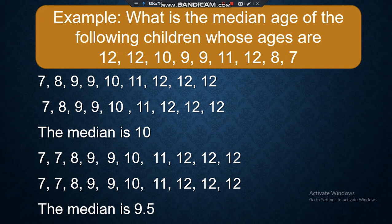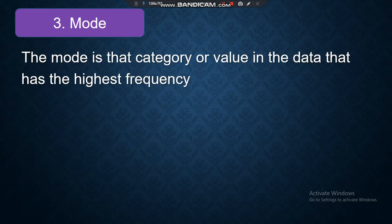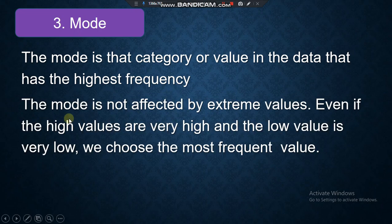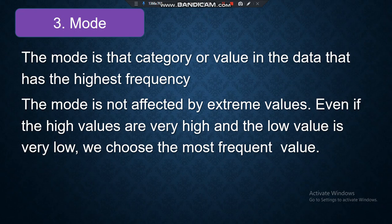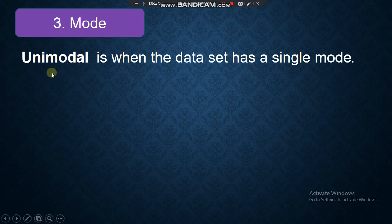Now let's go to the last one: mode. The mode is the category or value in the data that has the highest frequency — the most frequent value. The mode is not affected by extreme values; even if high values are very high and low values are very low, we choose the most frequent. A mode can be unimodal, bimodal, or multimodal.